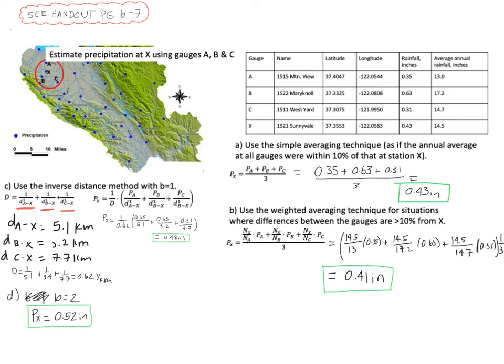So in your handout, you'll see the very last question asks which of these perform the best. And so it's hard to really know. We knew in this particular case that X was 0.43 inches, which we calculated in part A when we just used the regular mean. But that doesn't always tell the right picture, right?